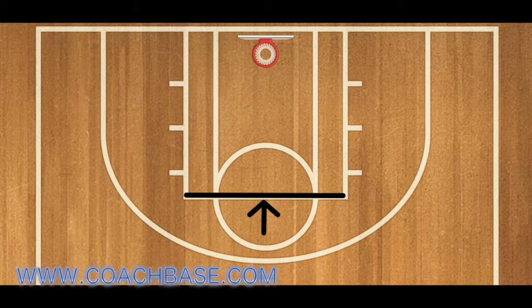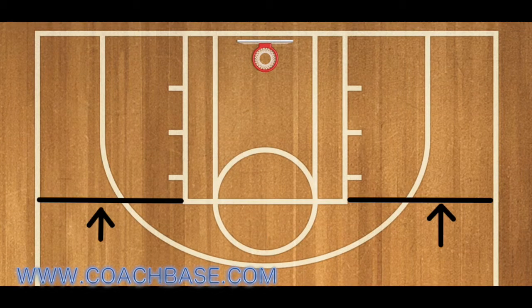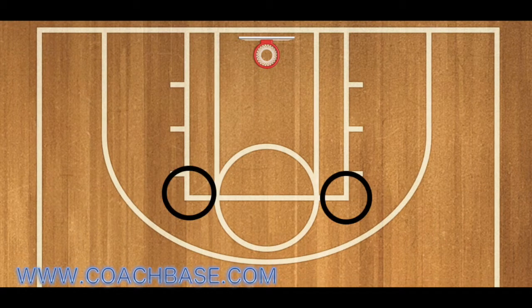Next is the free throw line extended — basically an imaginary line that runs from sideline to sideline along where the free throw line is. Next is the elbow, also called the high post. This is a perfect area to beat a zone defense.